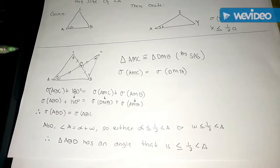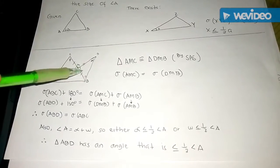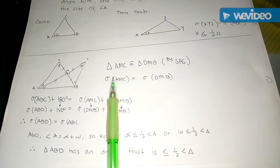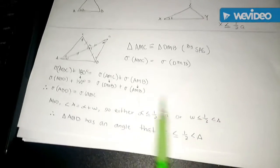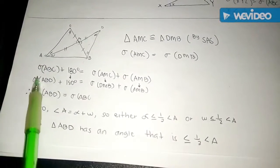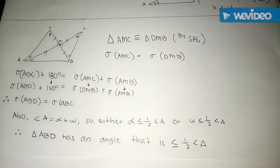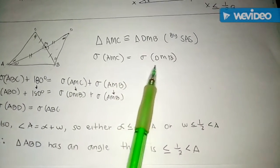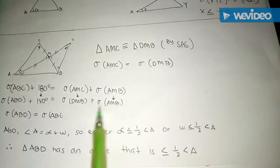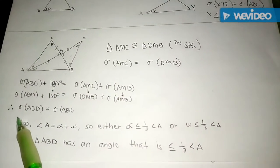We now have many congruent parts, and indeed triangle AMC is congruent to triangle DMB by Side-Angle-Side. Since corresponding parts of congruent triangles are congruent, these two triangles have the same angle sum. By Step 2, the angle sum of the large triangle ABC plus 180 degrees equals the angle sum of AMC plus the angle sum of AMB. Since σ(AMC) = σ(DMB), substituting proves that σ(ABC) = σ(ABD).